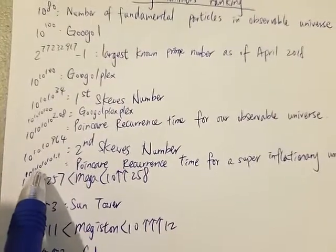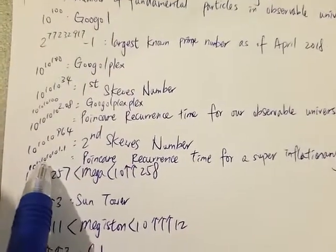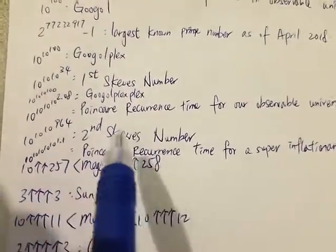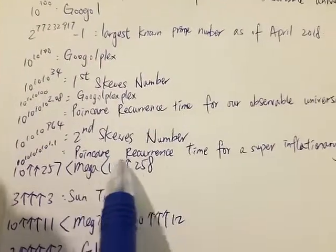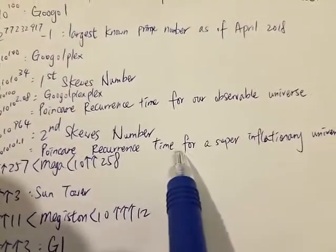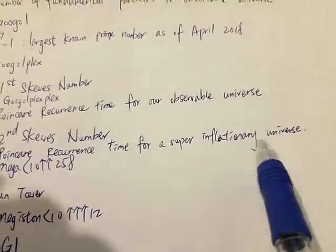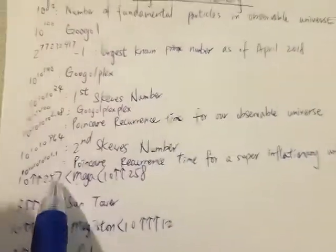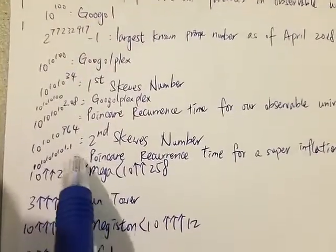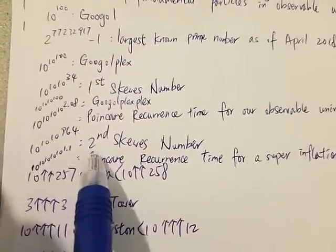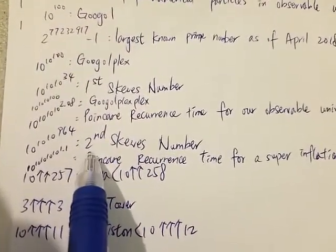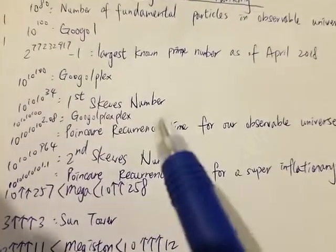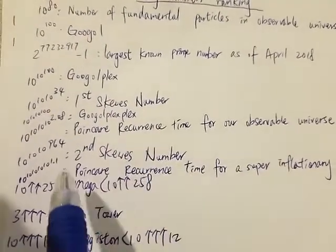Next we have 10 to the 10 to the 10 to the 10 to the 10 to the 1.1, which is the Poincaré recurrence time for a super-inflationary universe. This is also the biggest number in physics — actually, it's also the biggest number outside of mathematics.